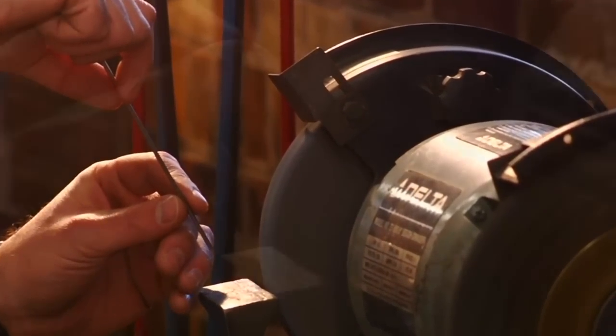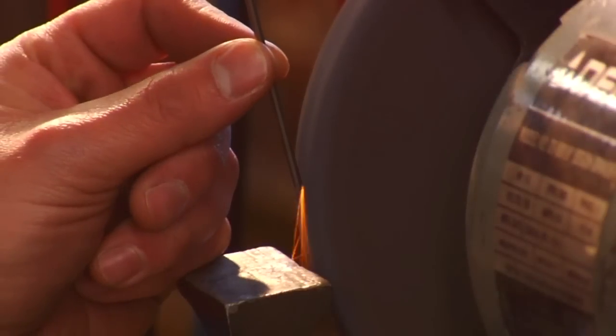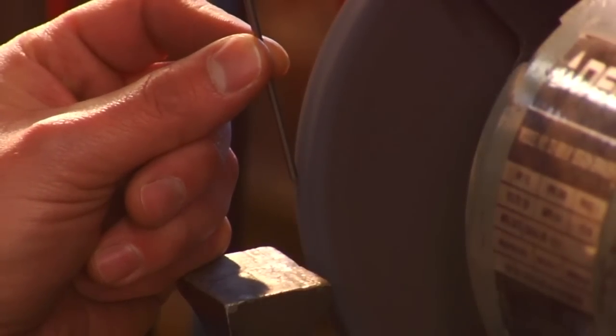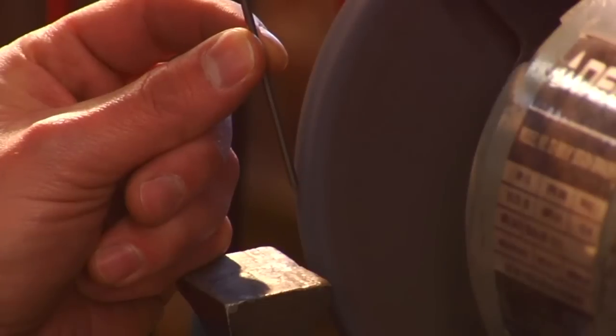With a steady grip, I slowly rotate the electrode to form a point, much like you would sharpen a pencil. I want a point that is no more than two and a half times the diameter of the electrode.